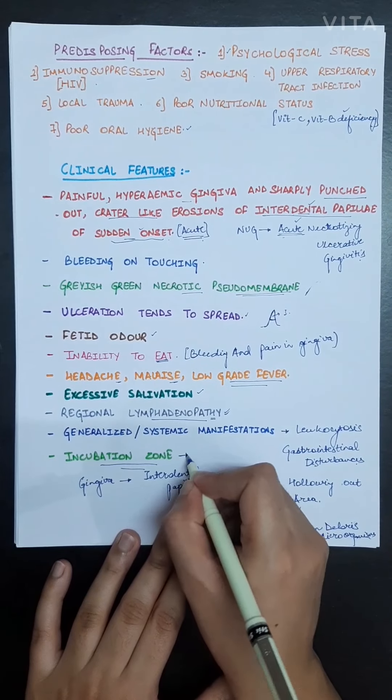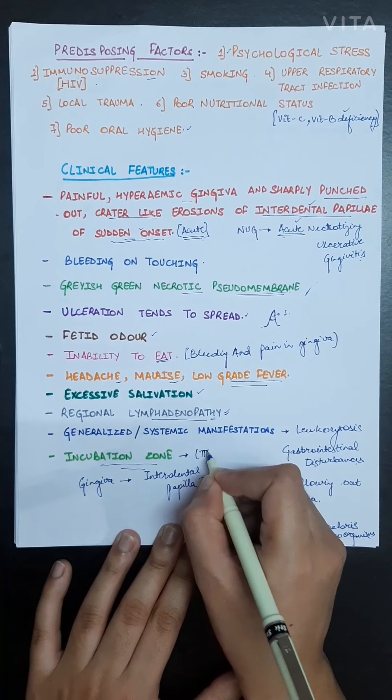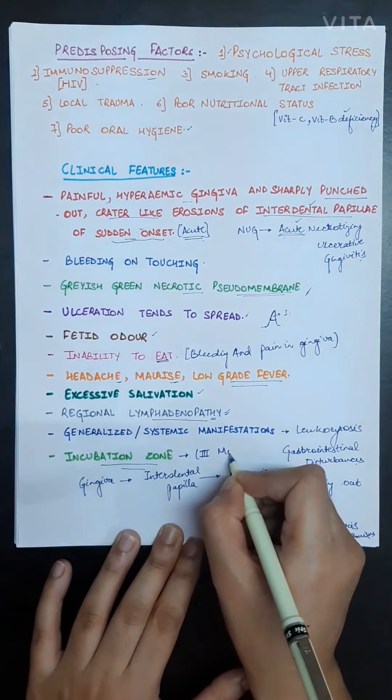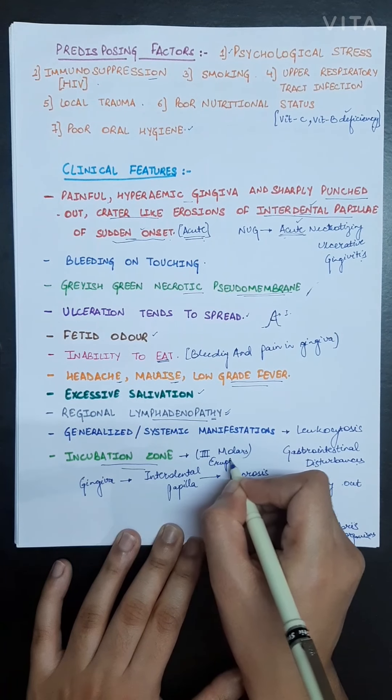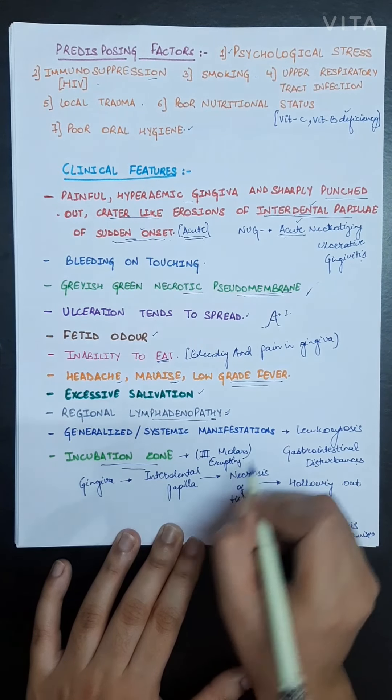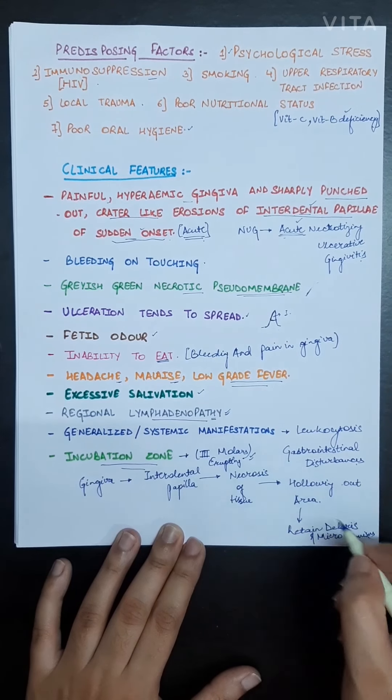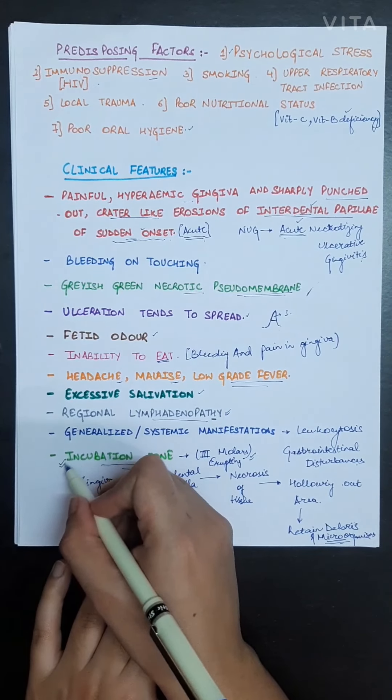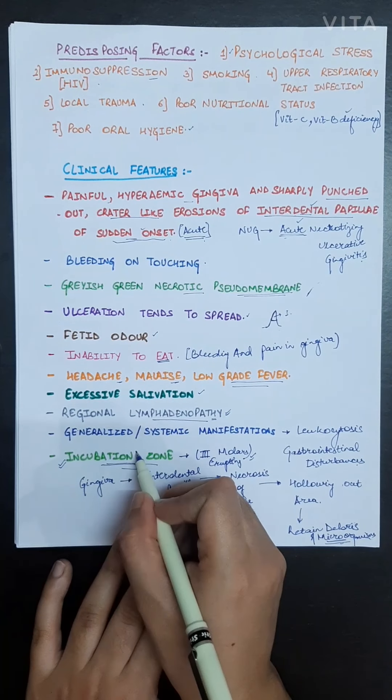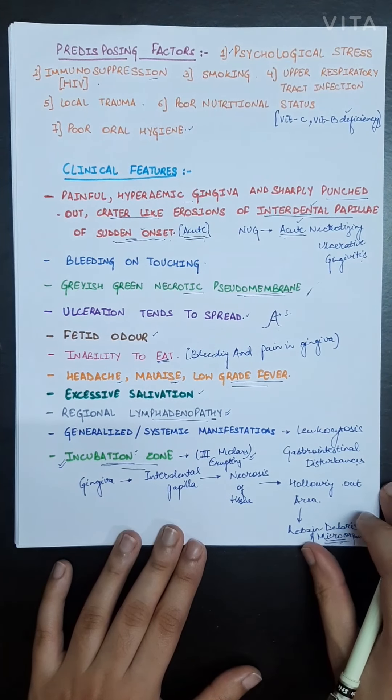This zone is more prevalent in third molars, basically the erupting third molars, and the microorganisms persist in these areas. That's why the name incubation zone is seen in ANUG.